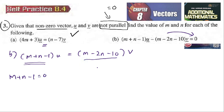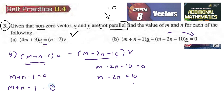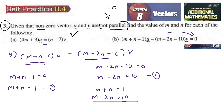We also take m minus two n minus ten equal to zero. So m plus n equals one, and m minus two n equals ten. We can now solve by simultaneous equations. To eliminate m, we subtract the equations: n minus negative two n gives three n, and one minus ten gives negative nine.